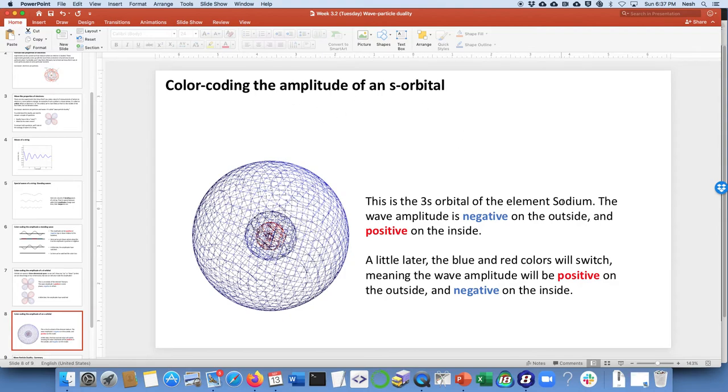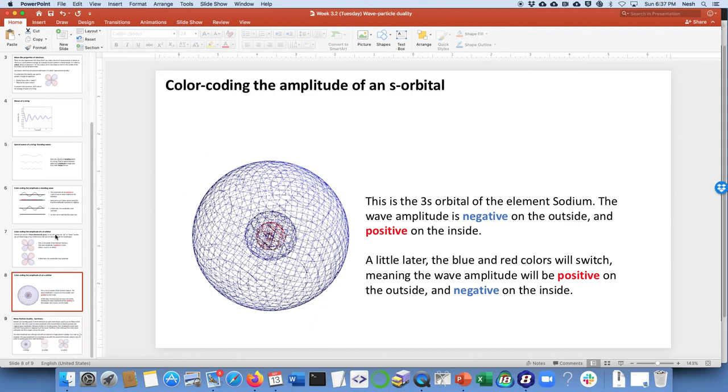I have another example. Here's a 3s orbital of the element sodium. In this case, I don't have the opposite sign for you. But here you can see since on the outside of this orbital, the wave amplitude is negative because it's blue. But you can kind of see that in the middle of it, it's red. So that must be positive amplitude right in the center of this and negative amplitude on the outside. A little bit later, probably the blue and red colors will switch, meaning that the wave amplitude would be positive on the outside, negative on the inside.